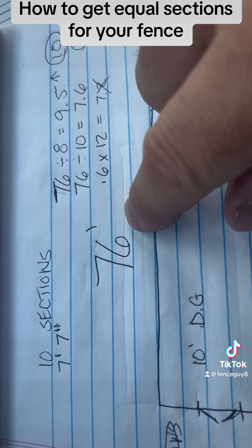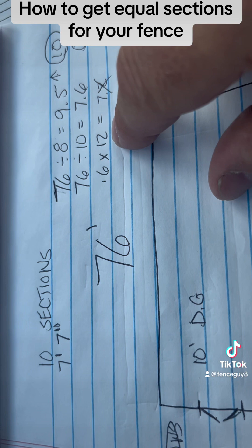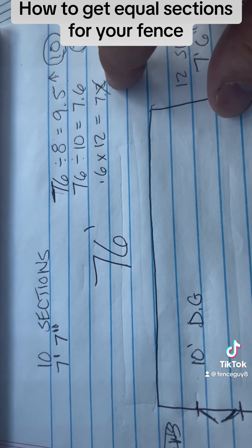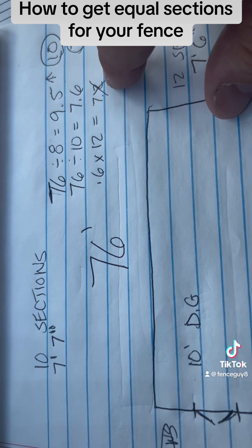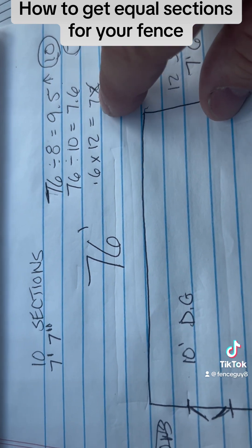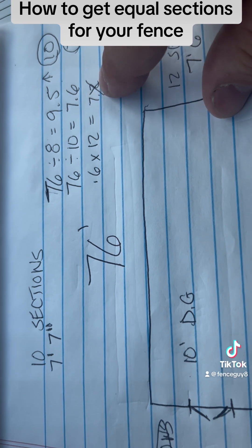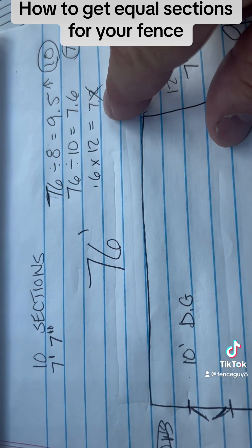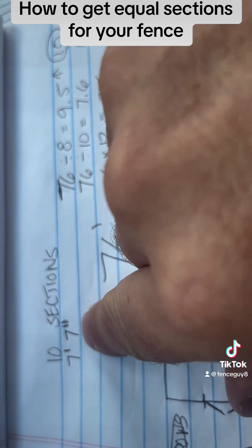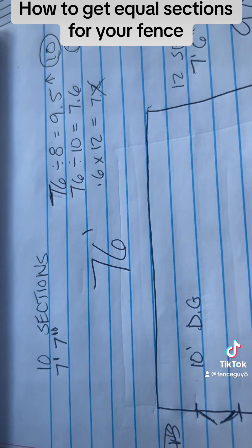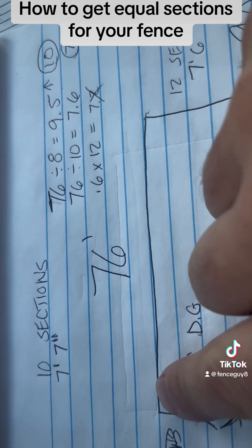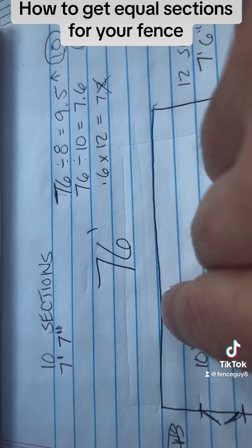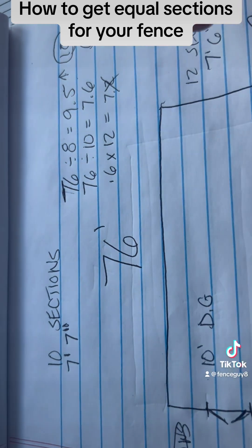So to find the inches, I'm just going to take 0.6 and multiply it by 12, and it comes out to 7.2. I usually round that if it's less than 6, I'll just leave it at the number it is. If it's more than 6, I'll round it up to the next number. So that leaves you 7 foot 7 inches. So 7 foot 7 inches is where I'm marking my posts. So on this back run, I'm going to have 10 sections and I'm going to mark each post at 7 foot 7 inches.